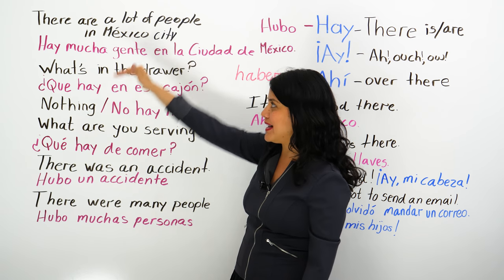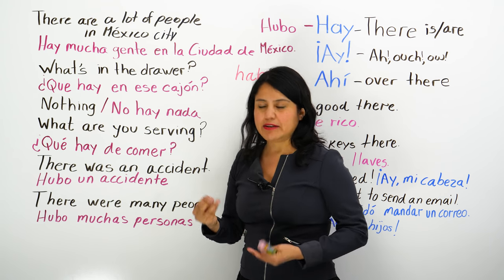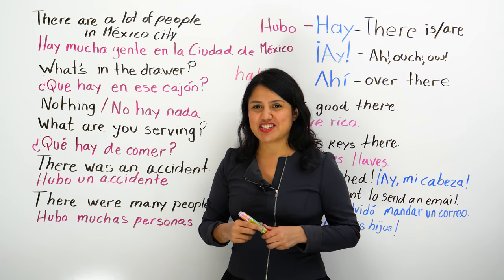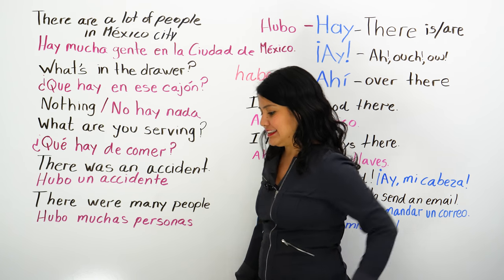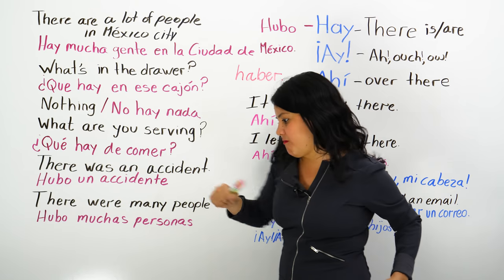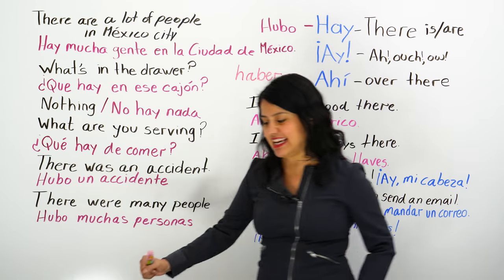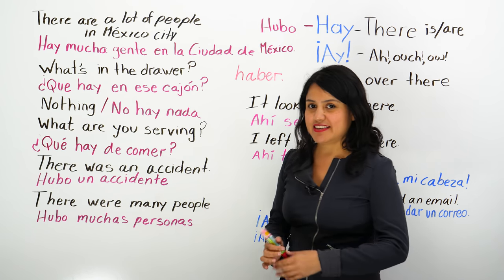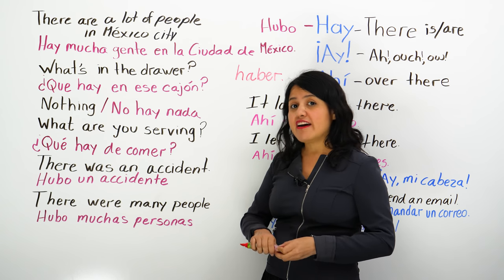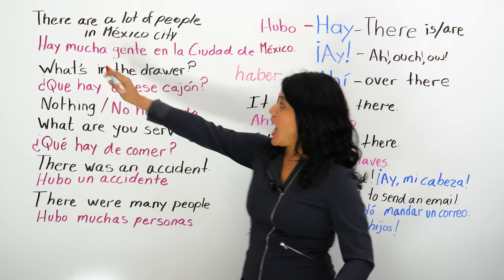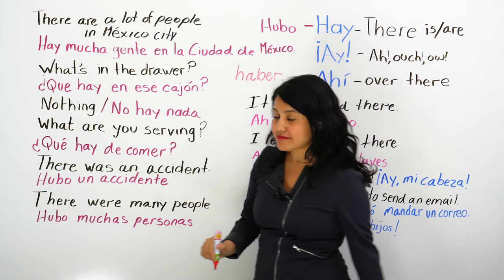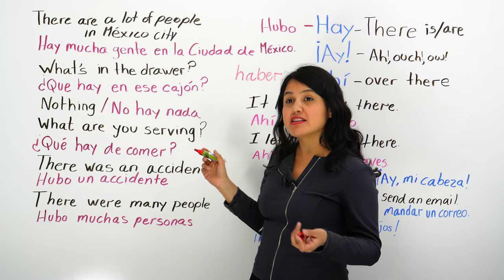I wrote the English first and then the Spanish so you can connect them easily. 'There are a lot of people in Mexico City' — hay mucha gente en la Ciudad de México. Every time you go there, crossing by the Palace of the Arts toward the Zócalo, it's like an army going. Before, they used to call it 'el DF,' but now it's 'la Ciudad de México' — the politically correct term.